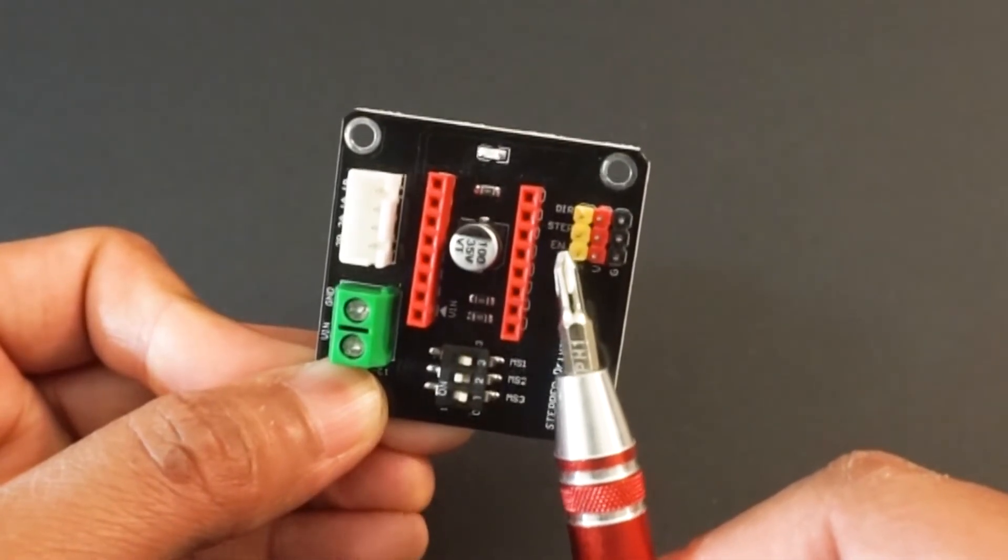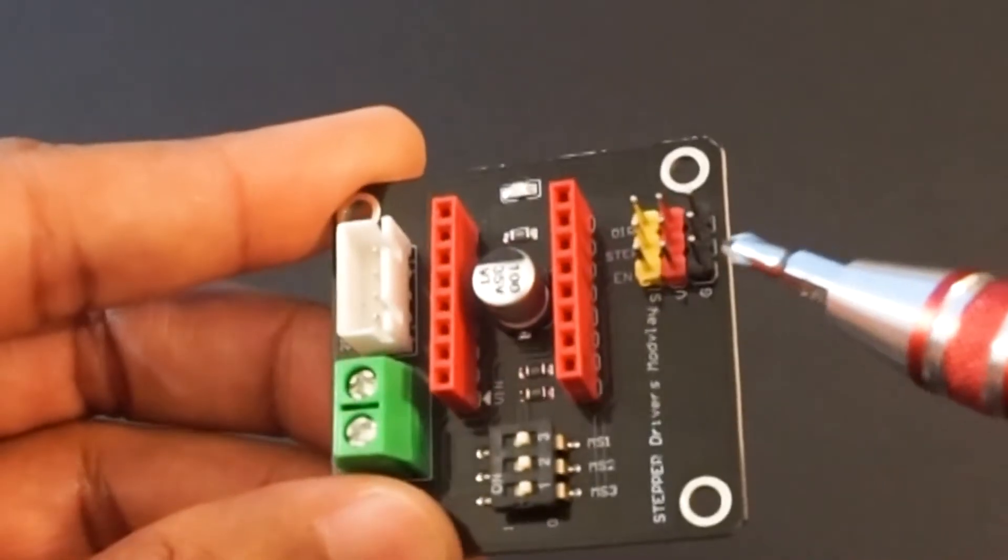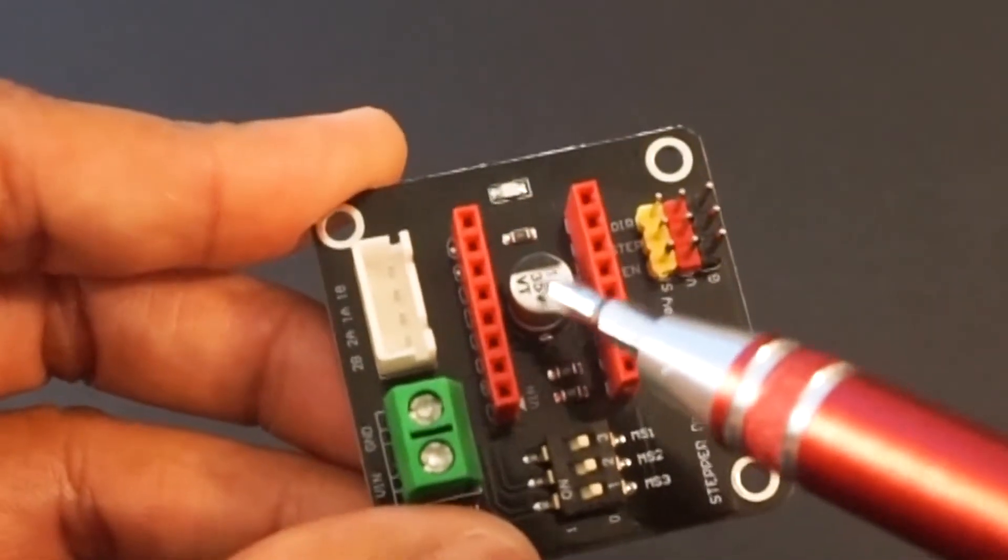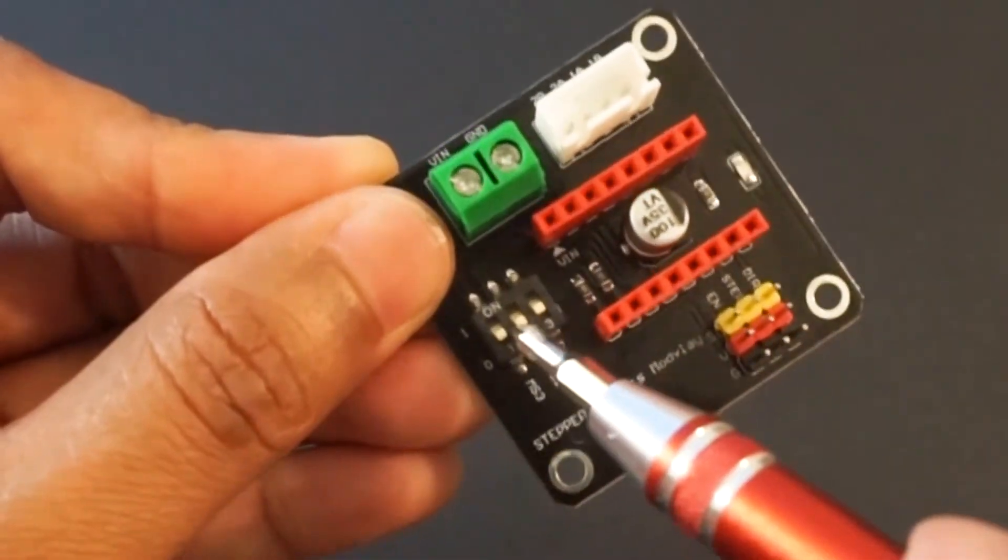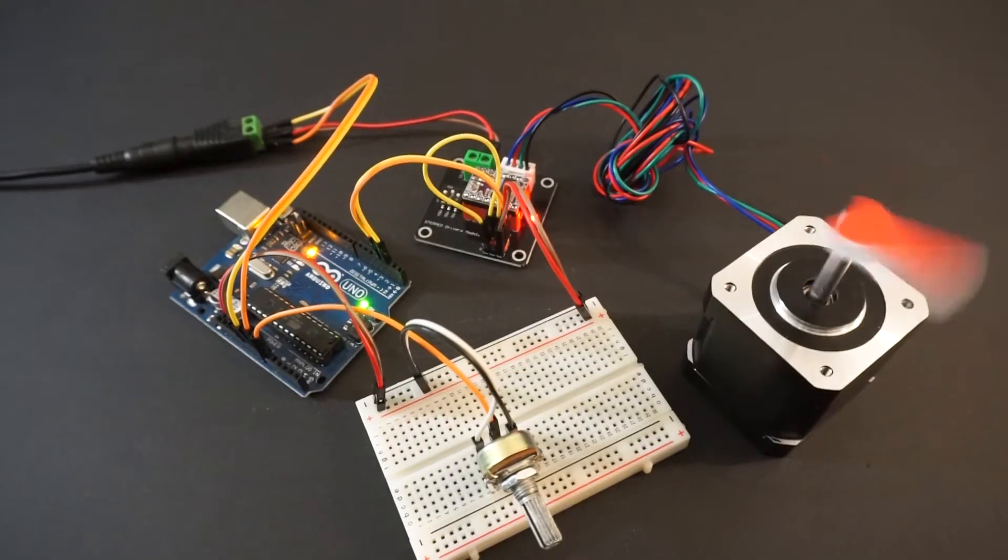There are V and G pins as well where we need to supply 5 volt and ground. It has capacitor on board. It also has MS1 to MS3 micro stepping select pins. Let's take a look at how we can run this stepper motor.